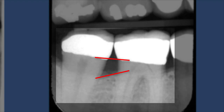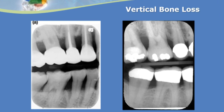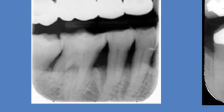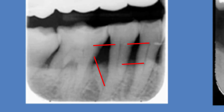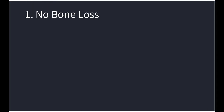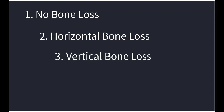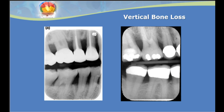Number 31 has vertical bone loss on the mesial. Is it possible to have both vertical and horizontal bone loss on the same tooth? Looking back at number 29 and evaluating its mesial — yes, a tooth can have both. There are four choices when evaluating bone loss: no bone loss, horizontal bone loss, vertical bone loss, or both horizontal and vertical bone loss. It's important to evaluate each tooth on both the mesial and distal when assessing bone loss.